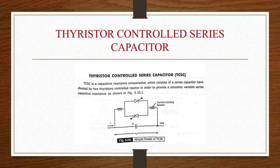We have seen what are the FACTS controllers and what are the various types of FACTS controllers. There are four types: series, shunt, combined series-series, and combined series-shunt.